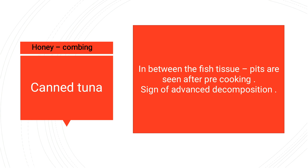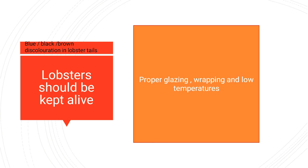Honeycombing is mainly seen in canned tuna. Pits are seen between the fish tissue after pre-cooking, and it is a sign of advanced decomposition. The structure resembles a honeycomb and is observed mainly in canned tuna products.